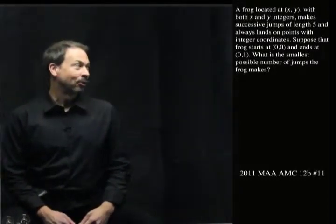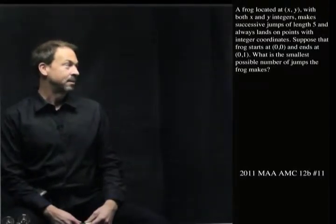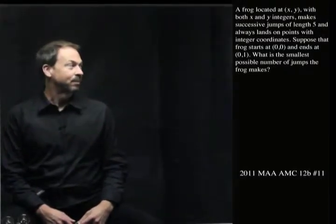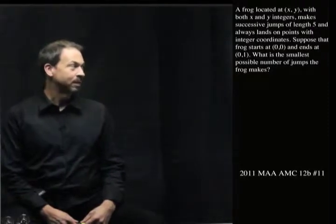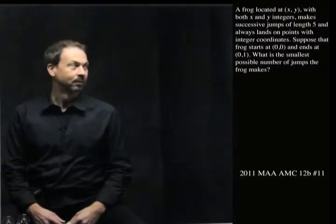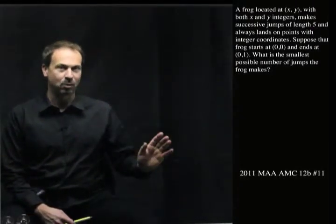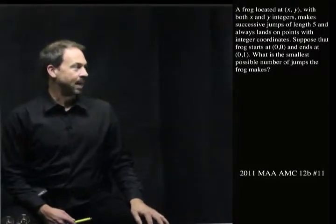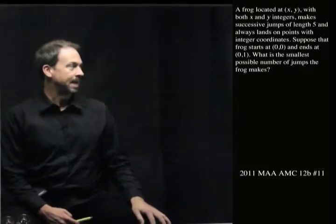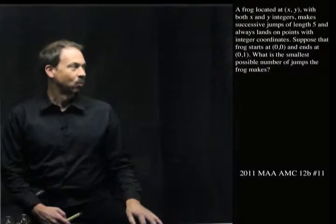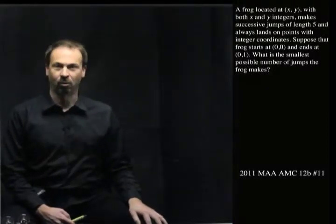A frog located at the point (x,y) with both x and y integers makes successive jumps of length 5 and always lands on points with integer coordinates. I have to think my way through what that means but let me just read on for the moment. Suppose the frog starts at (0,0), the origin, and ends up at (1,0). What is the smallest possible number of jumps the frog makes?